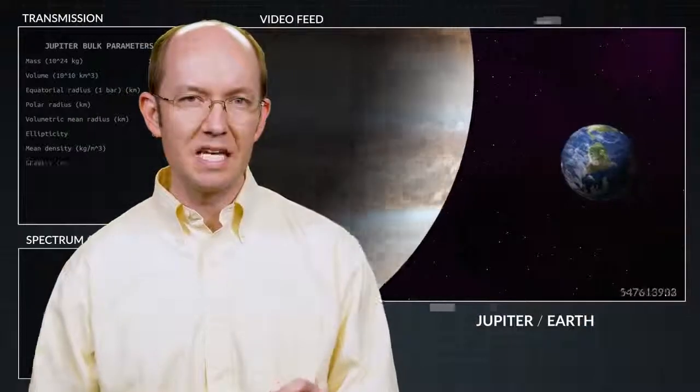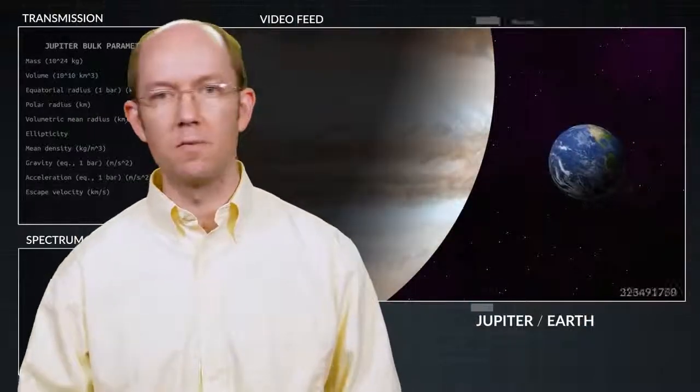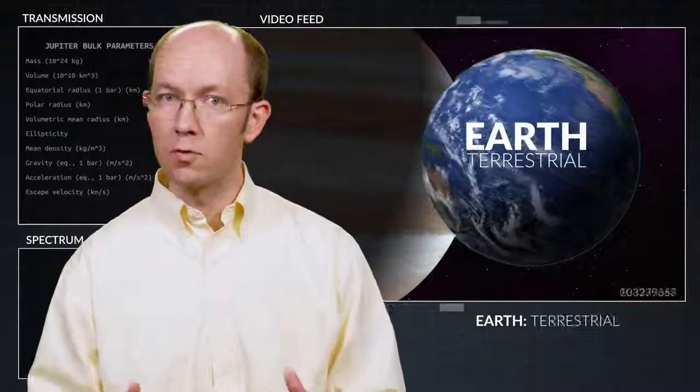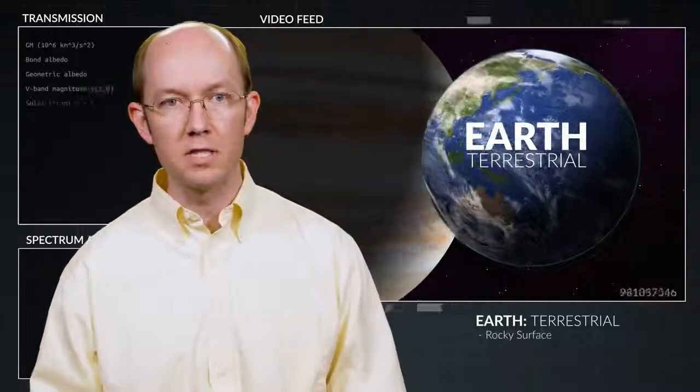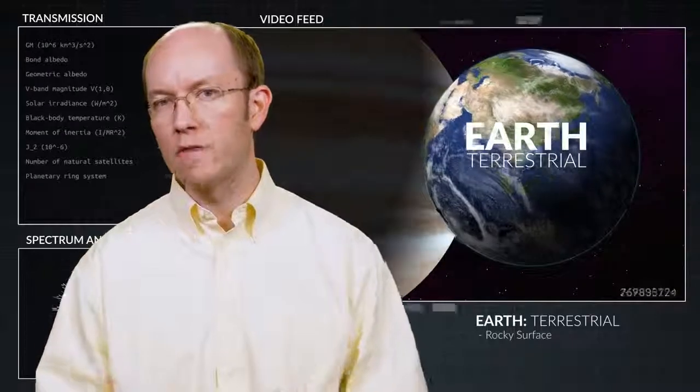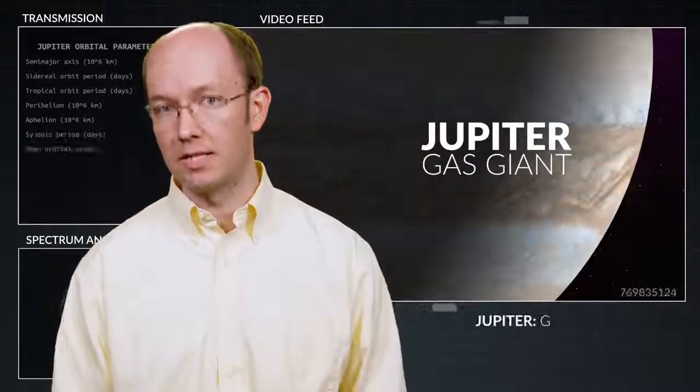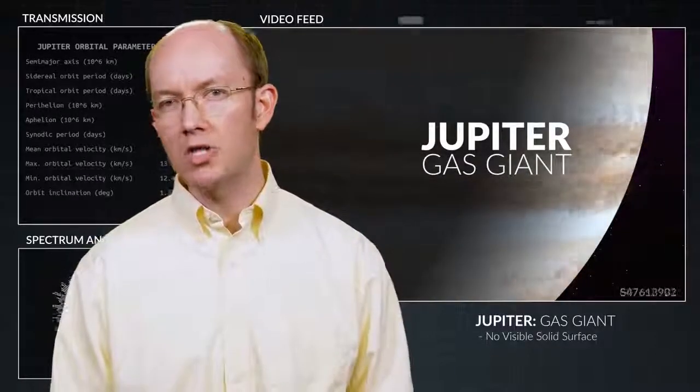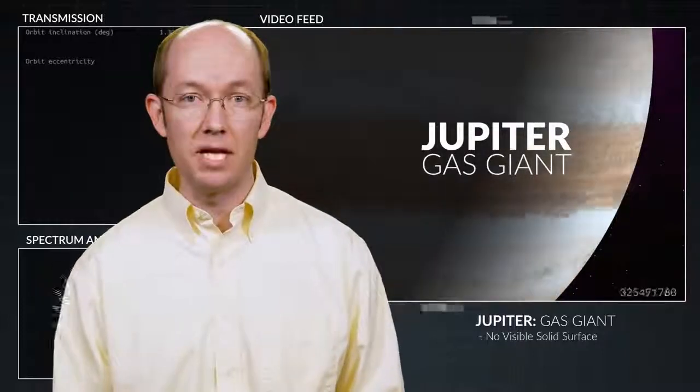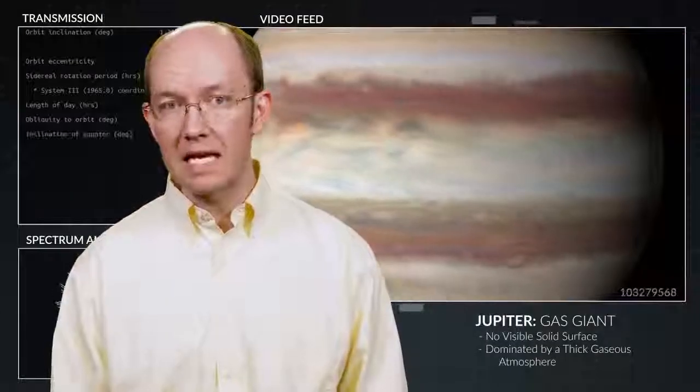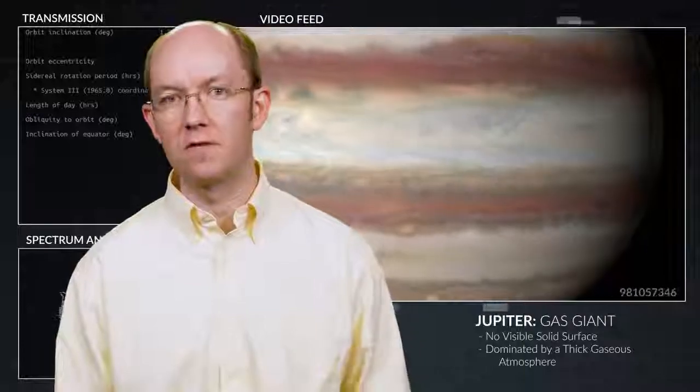Now, Jupiter is a drastically different kind of planet from Earth. Earth is a terrestrial planet, meaning it has a rocky surface that defines the majority of its size. Jupiter, on the other hand, is classified as a gas giant. It has no visible solid surface, and its size is dominated by an extremely thick and dense gaseous atmosphere.